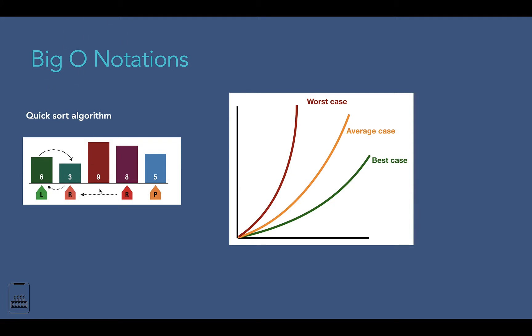Looking at this example, the first thing we do is select a random number as a pivot number. In this case, we select the rightmost number, which is five. Then we place left and right markers — the left marker on the left side and the right marker on the right side. Quicksort uses these markers to repeatedly perform rounds of operation recursively. The left marker moves right, and in each step compares the number with the pivot number, stopping when it reaches a number that is greater than or equal to the pivot.